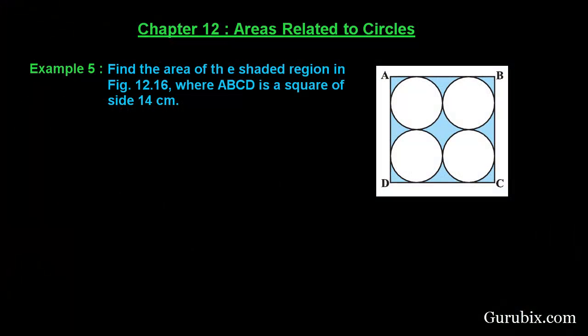Welcome friends, let's solve example number 5 of Chapter 12. The example says: find the area of the shaded region in figure 12.16. This is the figure 12.16, where ABCD is a square of side 14 centimeters.